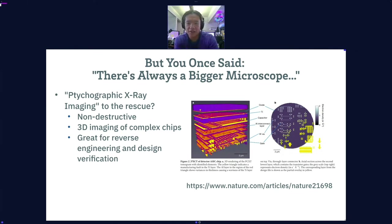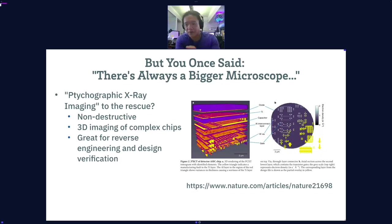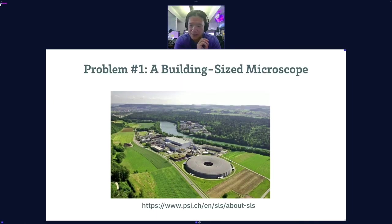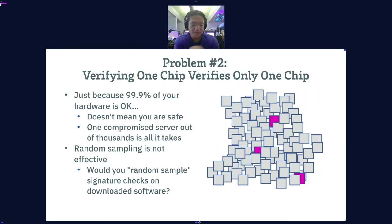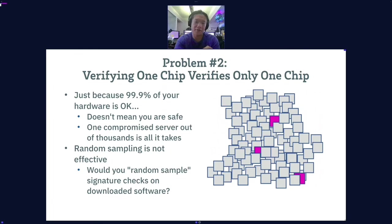There's always a bigger microscope. There are very sophisticated technologies you can use to image hardware down to the transistor level. But the microscope used in those papers is literally the size of a building — a synchrotron X-ray source used for tomographic imaging to view transistors at such fine resolution. It's not something you can park in your backyard to inspect everything from Amazon. The second problem is verifying one chip only verifies one chip. You have to check every single component — just one compromised component is all you need to install an implant. We do a hundred percent check on all our software, so why not for hardware?